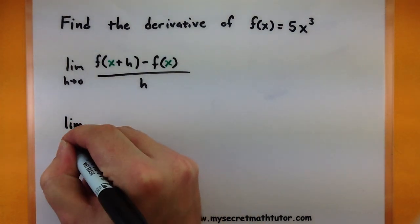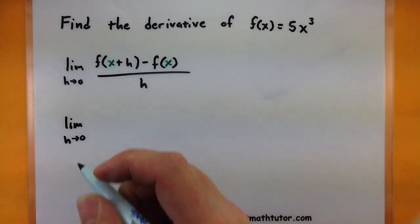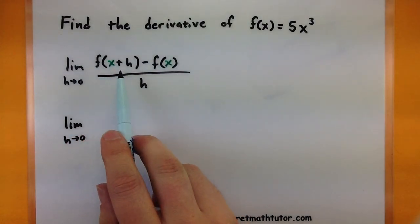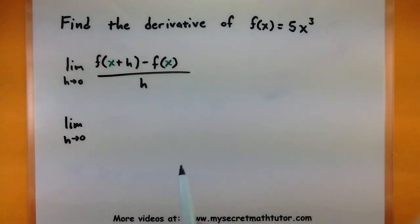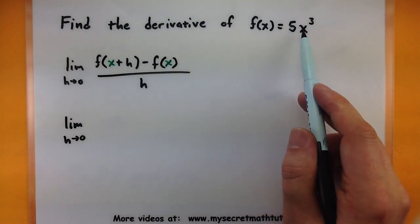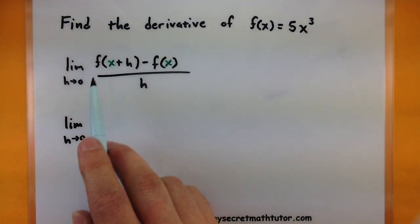So we'll look at the limit as h goes to zero, and then I need to put in x plus h into my function. So everywhere I see an x here, I'll replace that with an x plus h.